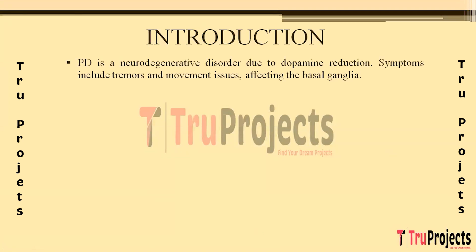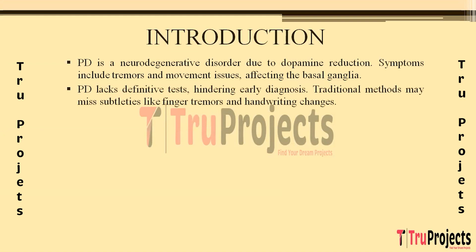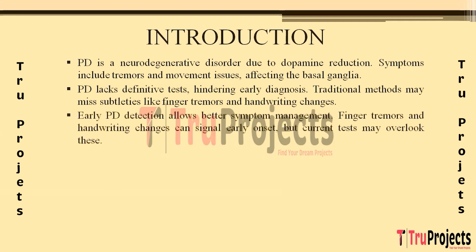Parkinson's disease is a neurodegenerative disorder characterized by a reduction in dopamine levels, leading to symptoms such as tremors, slowness of movement, and muscle stiffness. It primarily affects the basal ganglia, responsible for movement and coordination control. Parkinson's disease diagnosis is challenging, often relying on clinical observations rather than definitive tests. Early detection is crucial for effective management, but there is a lack of specific diagnostic tests, making it challenging to identify the disease in its early stages. Early detection allows for better symptom management and the potential to delay disease progression.